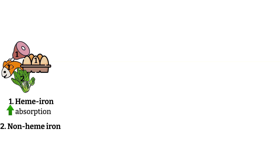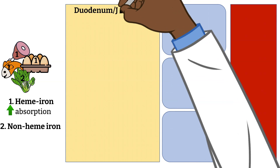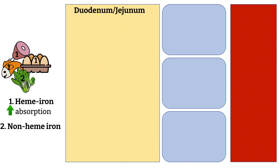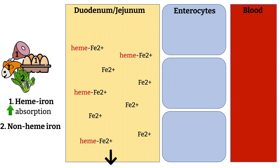Once these foods are consumed by the mouth, the absorption occurs mainly in the duodenum and the jejunum of the small intestines. Assume this yellow part is inside the small intestines and food is moving down. Here we have the enterocytes, or the cells that line the GI, and blood vessels right next to it. In the small intestines, iron is absorbed in two main forms: heme iron and non-heme ferrous iron.